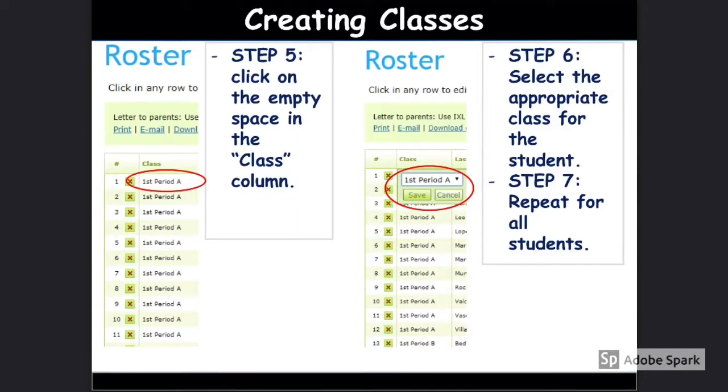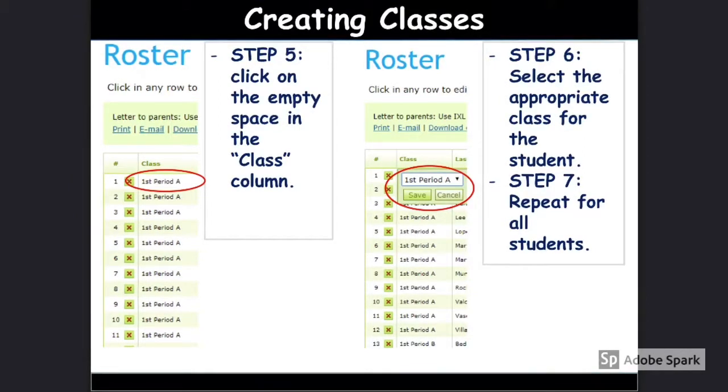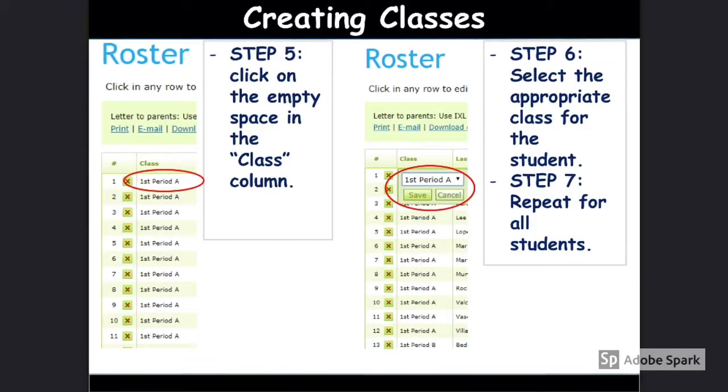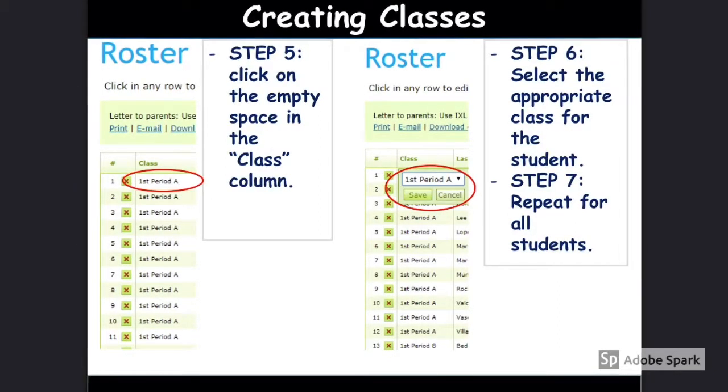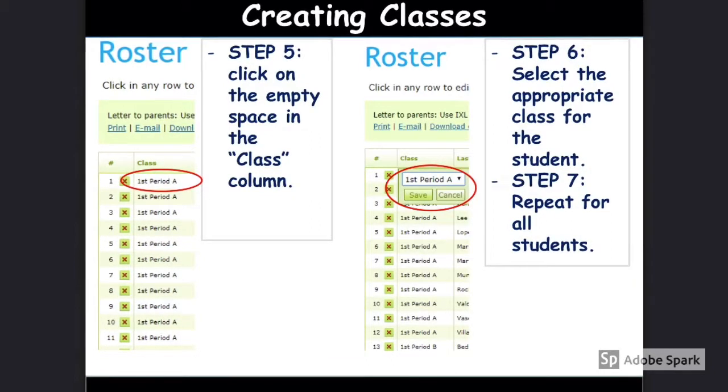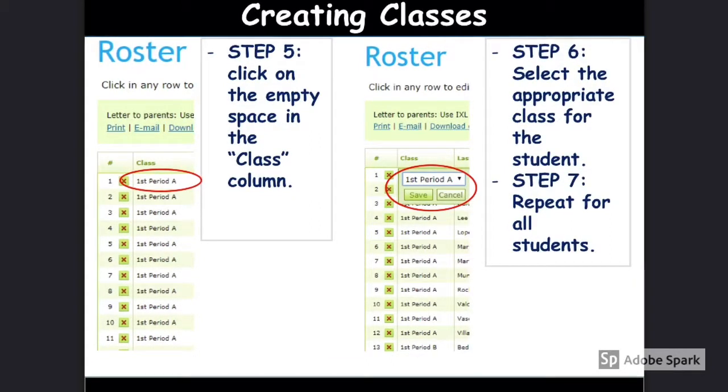Upon doing so there should be a blank column on the left side of every student's name. It should be titled class. As you can see in mine they're already filled out. What you would do is click on the empty space next to each student's name and then select the appropriate class for the students.